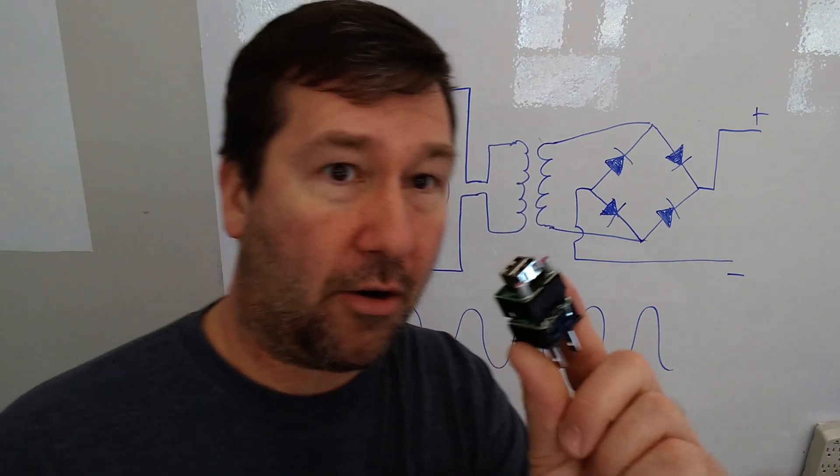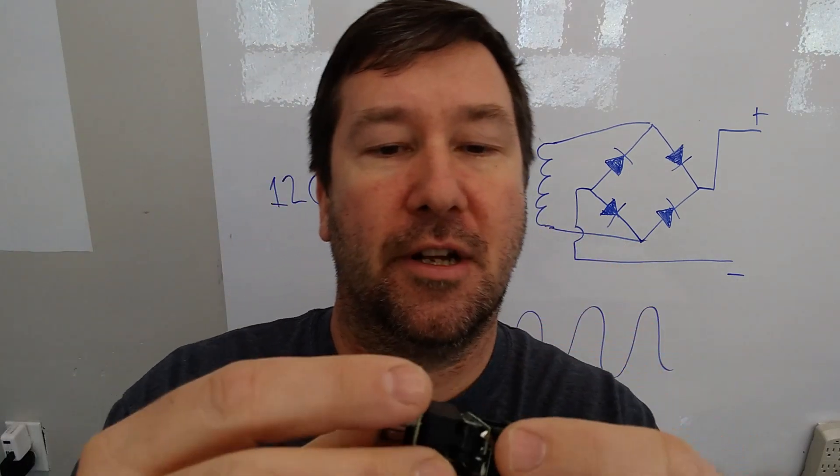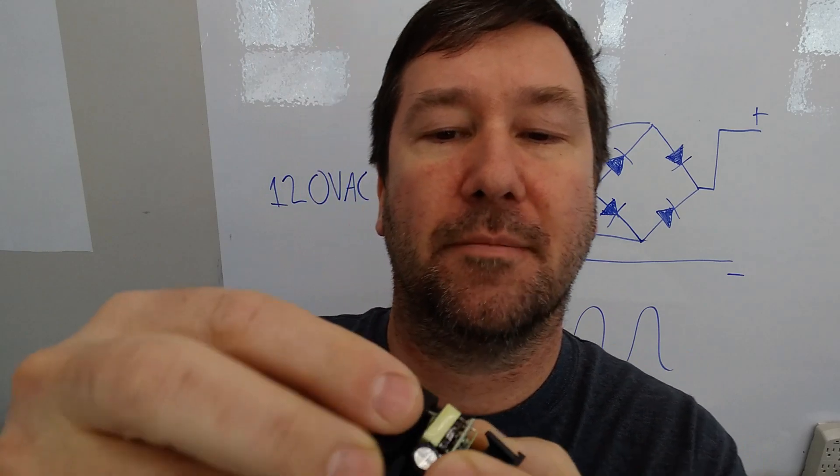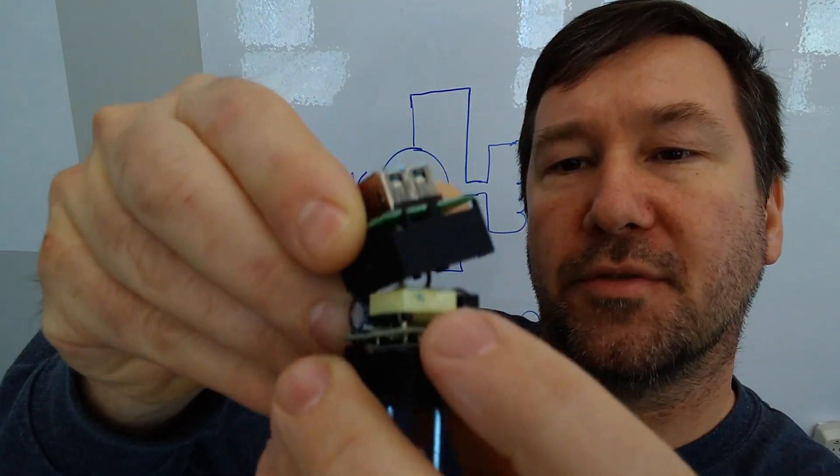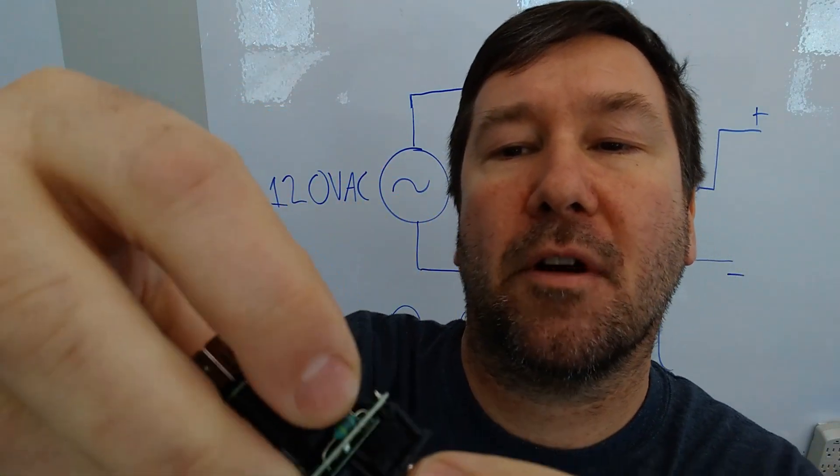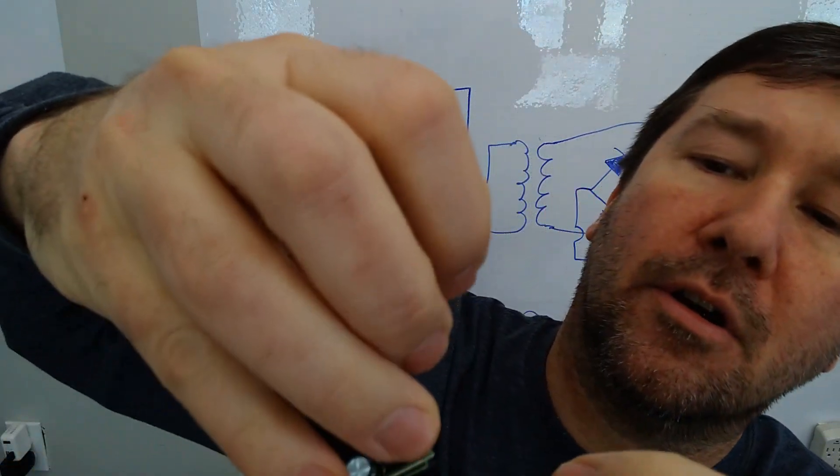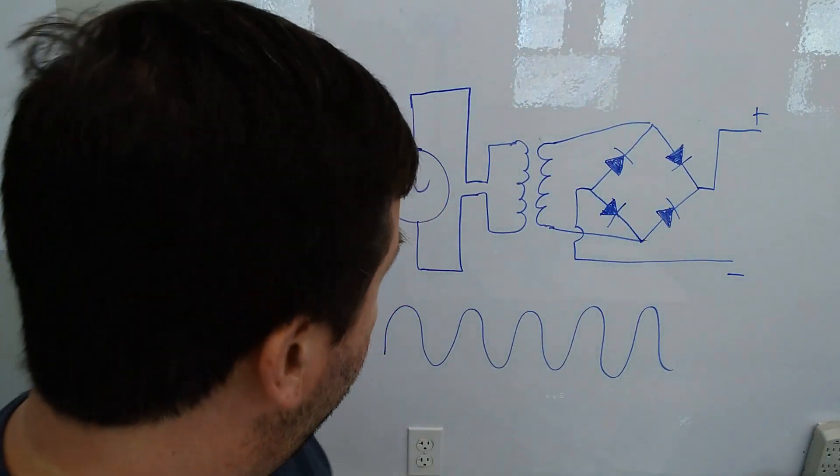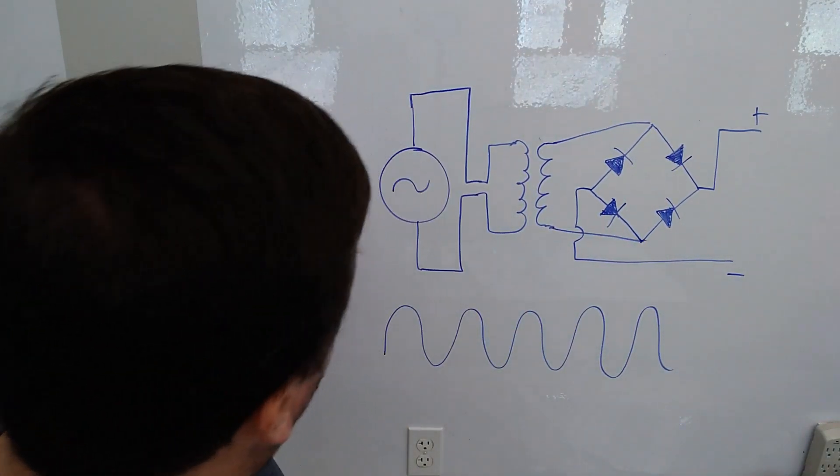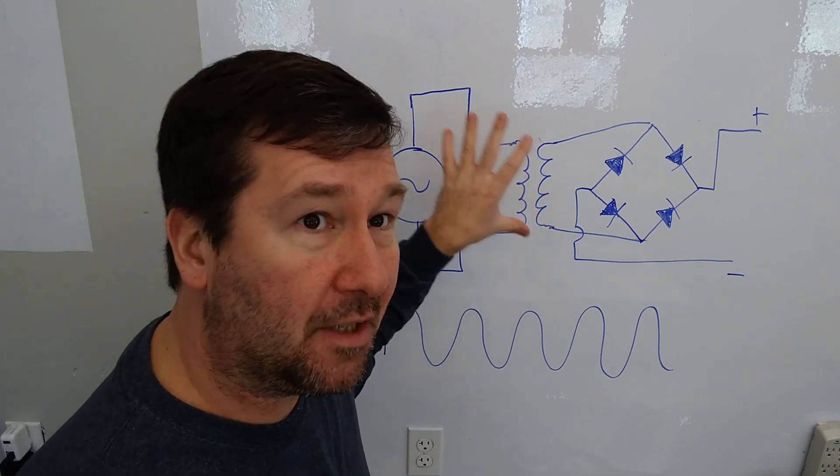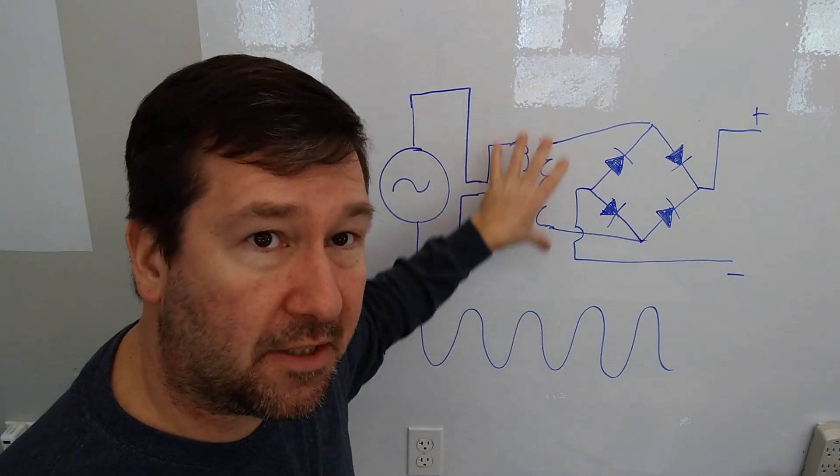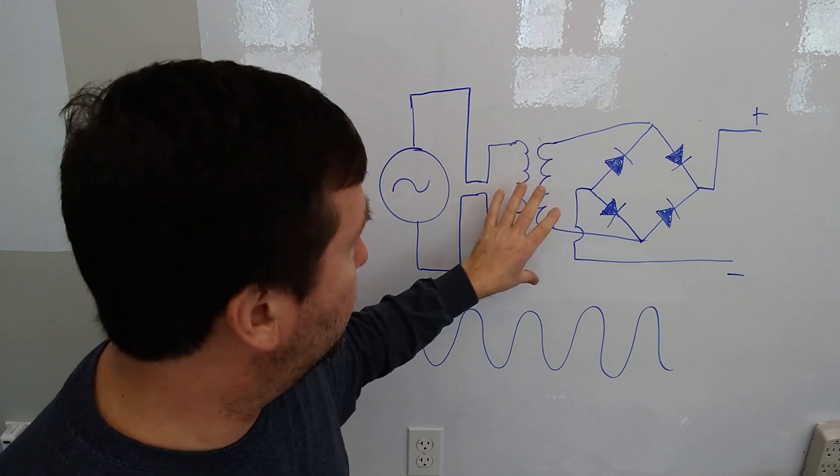So in our little cell phone charger, we're going to look at mainly two components. If we look right here, we have a small transformer. And then right over here, we actually have four diodes. And that's what I've drawn here. So we've got 120 volt coming in, and then we're dropping it down to a lower voltage. We've talked about this in previous videos, how transformers work.